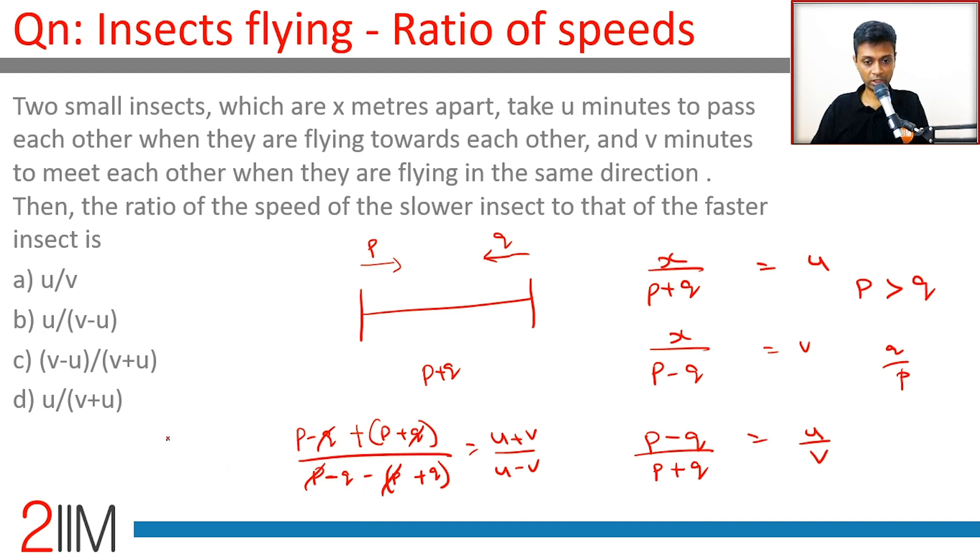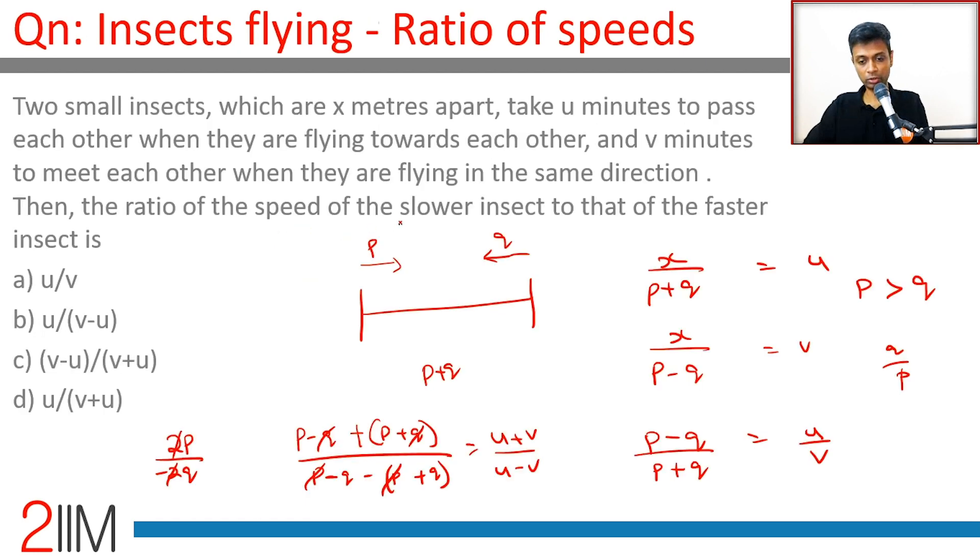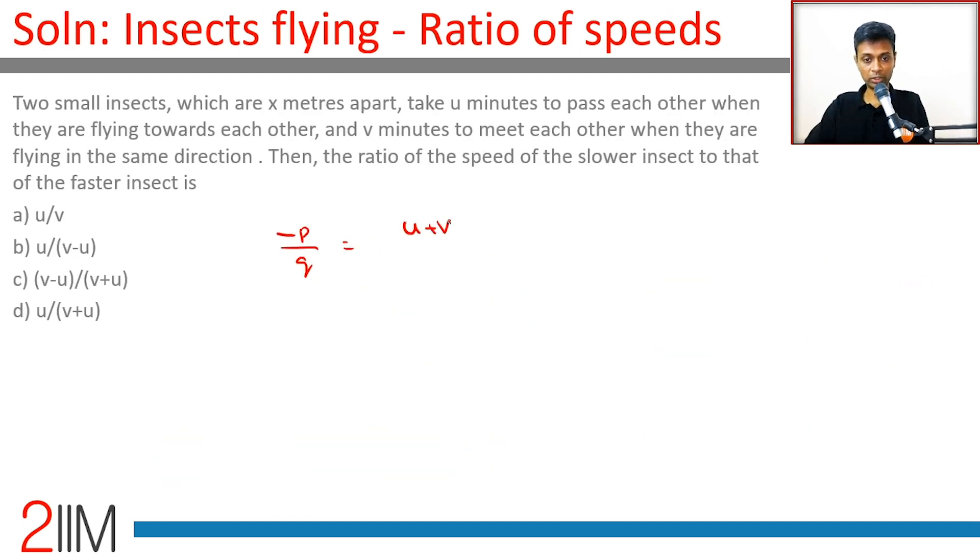What do we get? We get 2p minus 2q, which is p by q, equal to u plus v by u minus v. p by q is u plus v by v minus u. We want q by p, that is going to be v minus u by u plus v. Wonderful question.